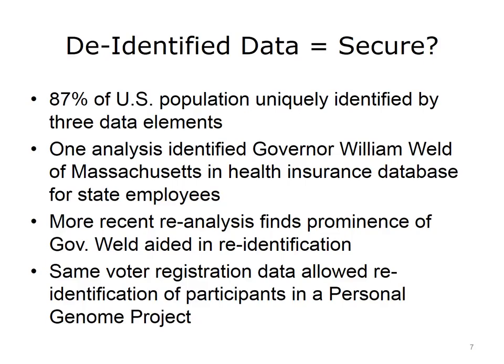It must be noted that recent reanalysis of the population demographics found the fact that Mr. Weld was a public figure who experienced a much-publicized hospitalization played a part in his being so easily identifiable in the insurance database. However, in 2013, using voter registration data of participants in the Massachusetts-based Personal Genome Project, Sweeney was also able to show that people who have agreed to have their genomic data published are relatively easily identified individually using that voter registration data.